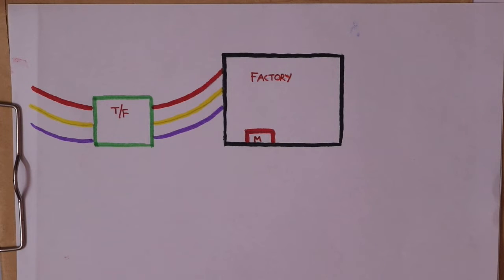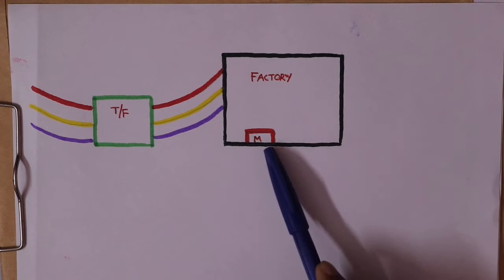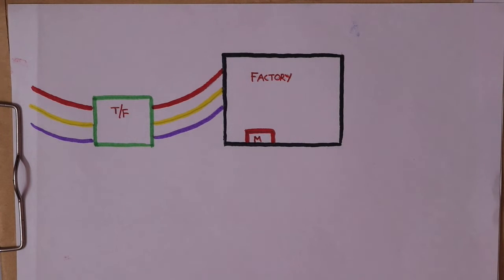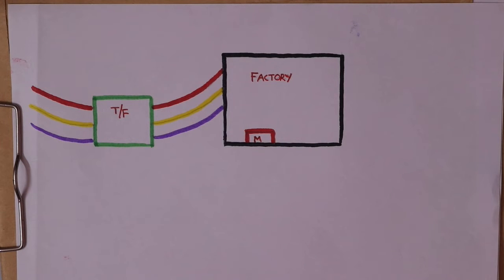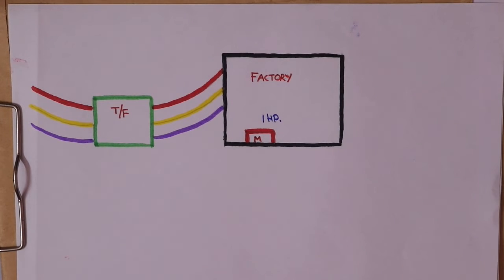Let's take a look at an example. I have a factory. I have a motor in the factory. I don't know the specification. We have a supplier. We have to select a transformer and cable. Now, I have a one HP motor — just a little example.